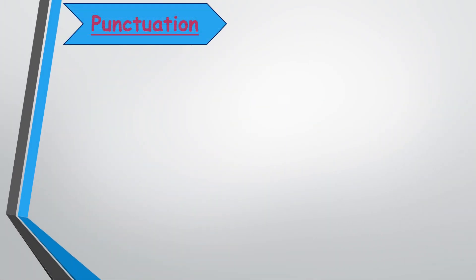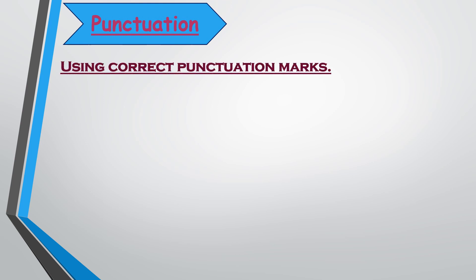The next exercise is punctuation. It is related with using correct punctuation marks. What is punctuation? Punctuation is the system of signs or symbols given to a reader to show how a sentence is constructed and how it should be read. Punctuation shows how the sentence should be read and makes the meaning clear. While speaking, we use pauses and pitch of voice to make ourselves clear; punctuation plays a similar role in writing. The most common punctuation marks in English are capital letters, full stops, question marks, commas, colons, semicolons, exclamation marks, and quotation marks.